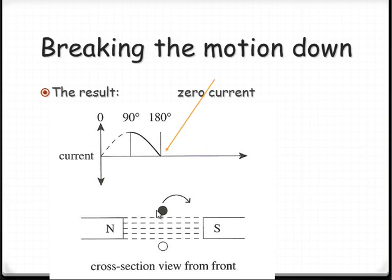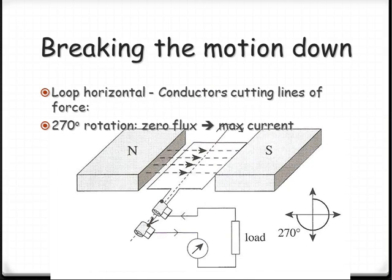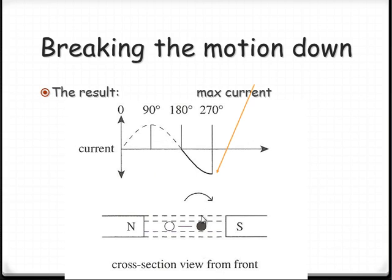Going around another quarter of a rotation, we're back to maximum flux, no field lines being cut, and so we are back to zero current. In the next quarter of the rotation, the side which was previously going up is now going down, and the side that was going down is now going up. Because it's cutting in the opposite direction, the direction of the current will have been reversed. We now have maximum current because we're cutting perpendicular, but in the opposite direction.